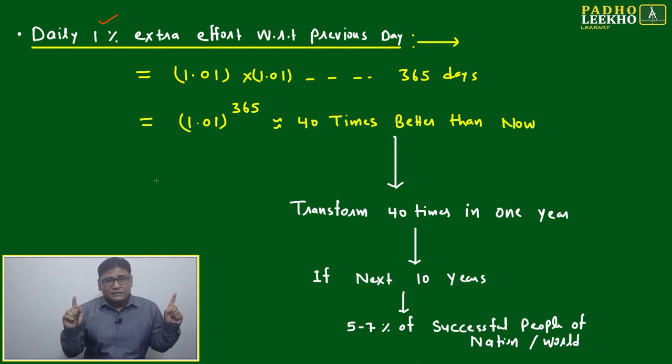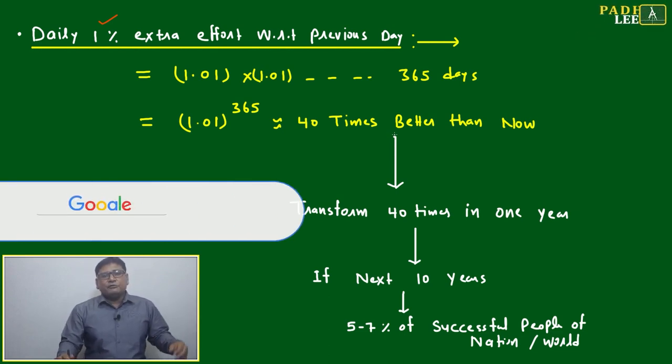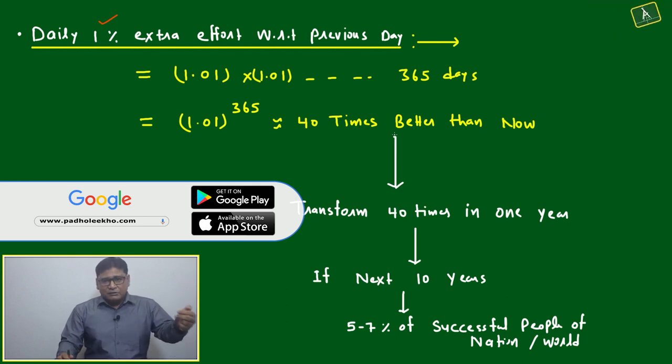Mathematically, if daily you are putting seven hours of effort for your preparation, you put one percent extra tomorrow, one percent extra tomorrow. If you are a bad reader, you are reading four pages daily. Every week you increase two pages, next week again increase two pages. You go to 20 pages, then you stabilize.